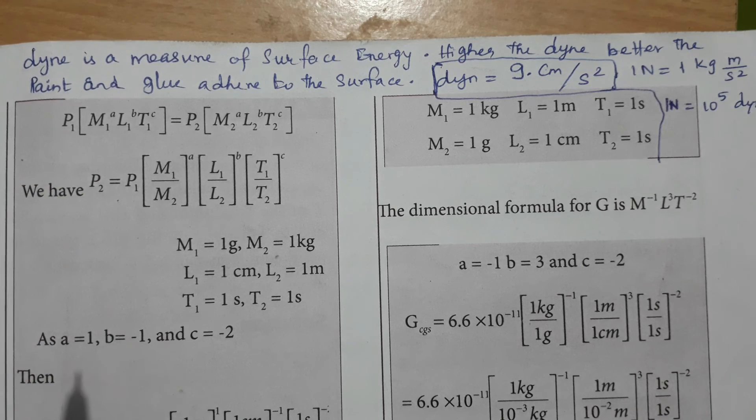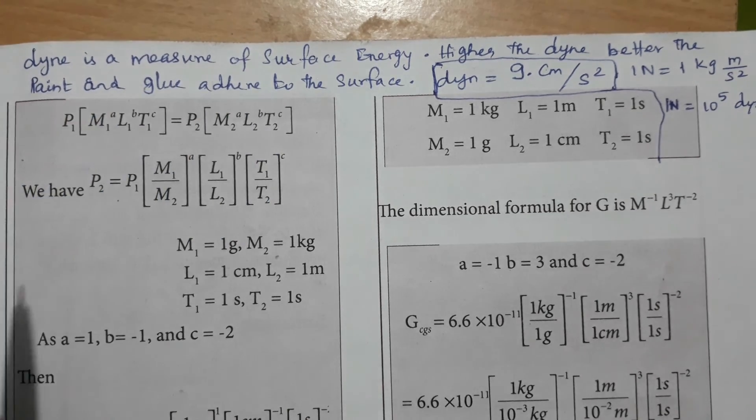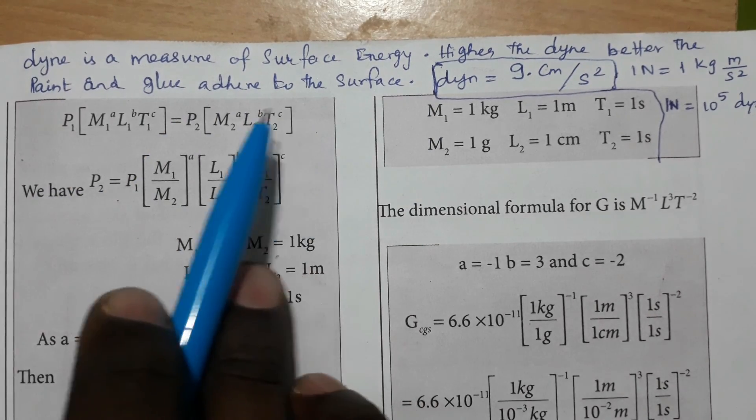So suppose if they paint it on copper, what is the amount of adherence to the surface? The higher the dyne value, the higher the adherence or attachment.